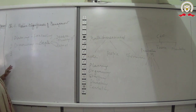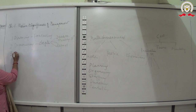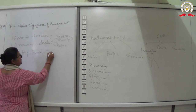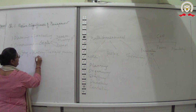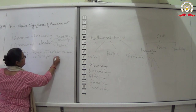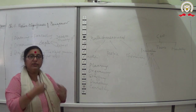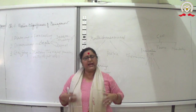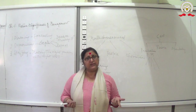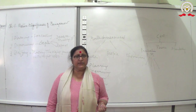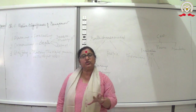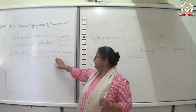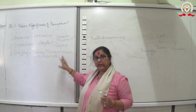The third function is staffing — placing the right person with the right skill. For example, a business studies teacher can only teach business studies. If asked to teach another subject, neither the teacher nor students benefit. So a person should be given a job for which they are trained, eligible, and qualified. That is placing the right person with the right skill.